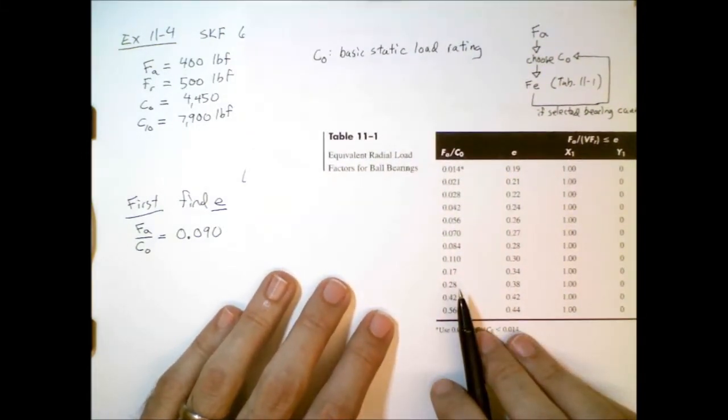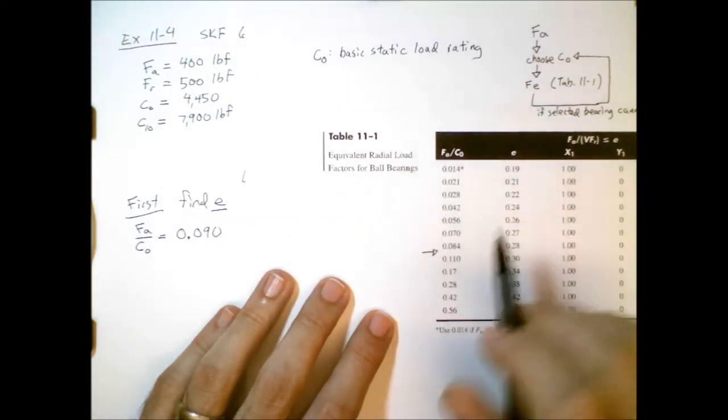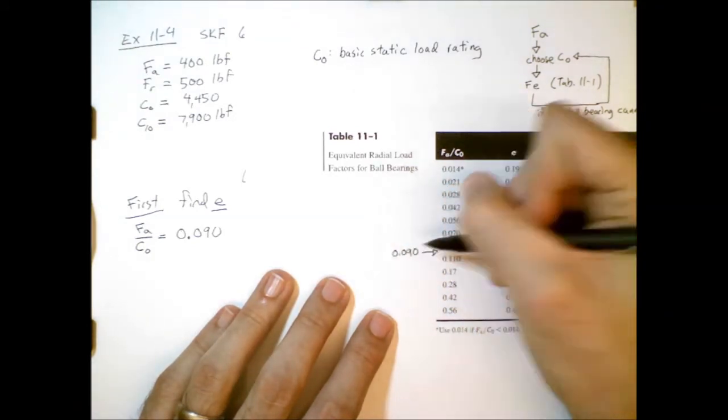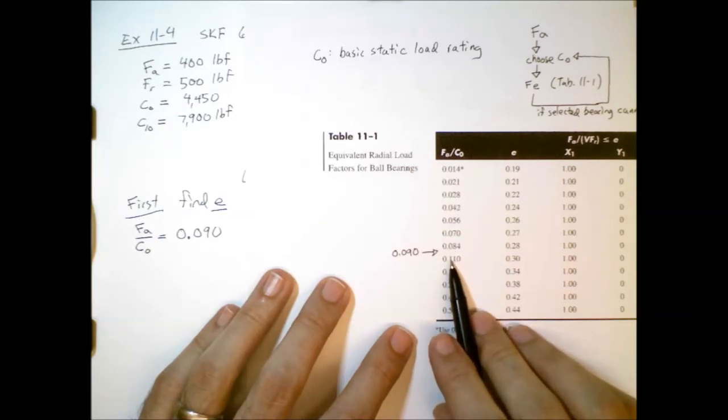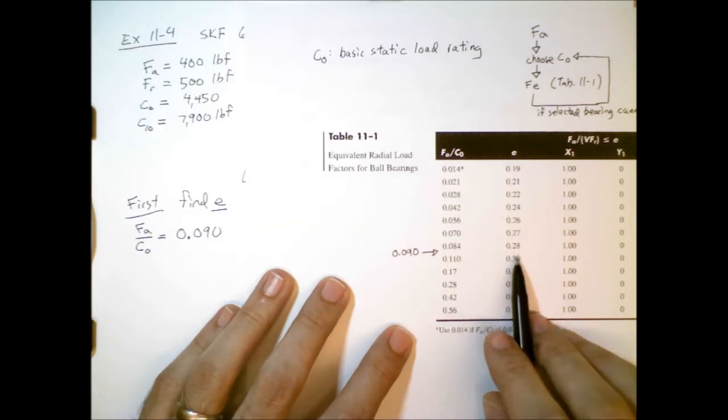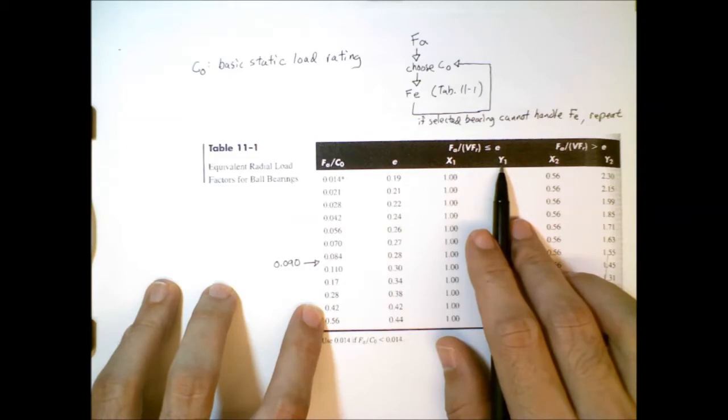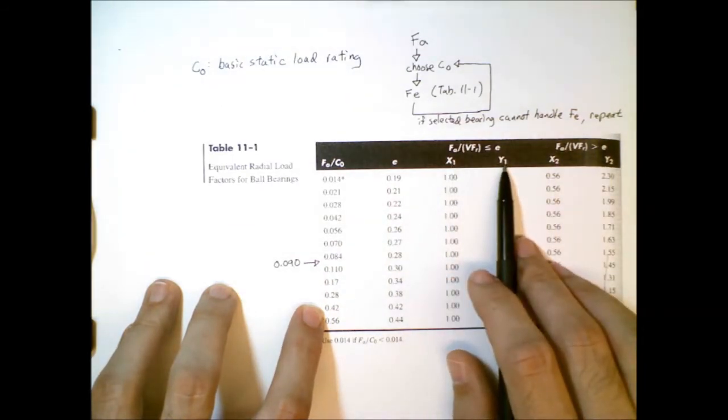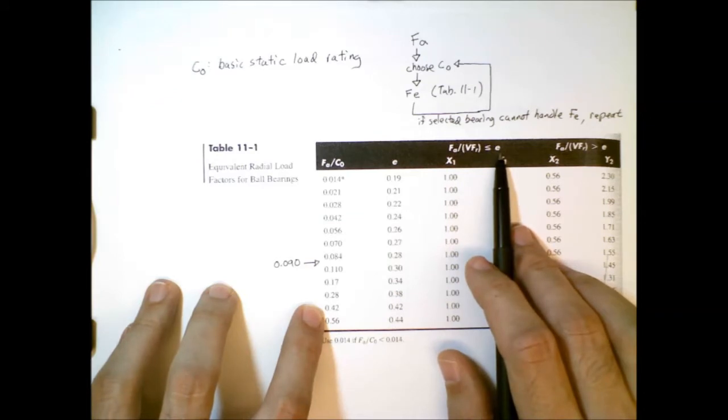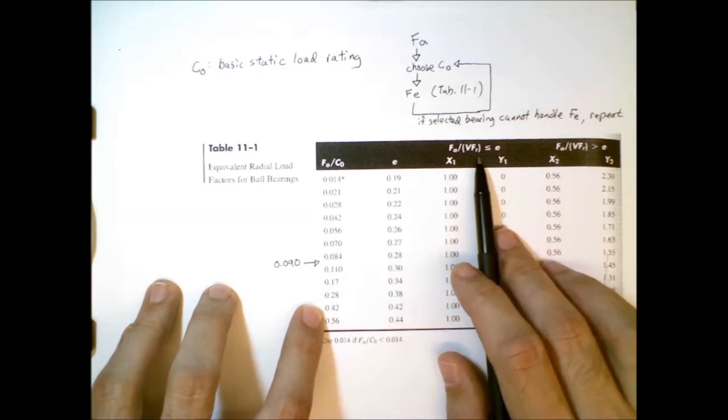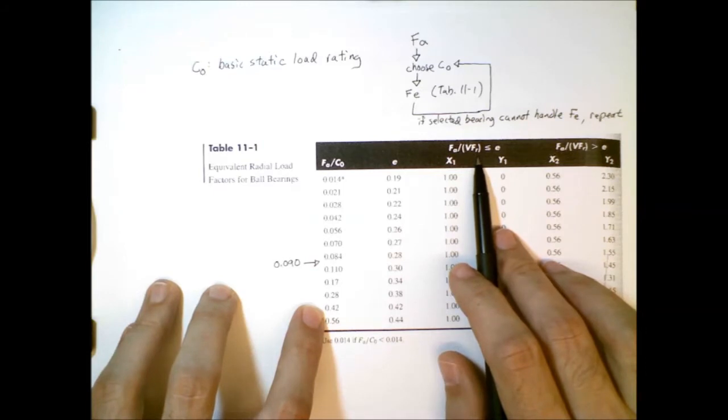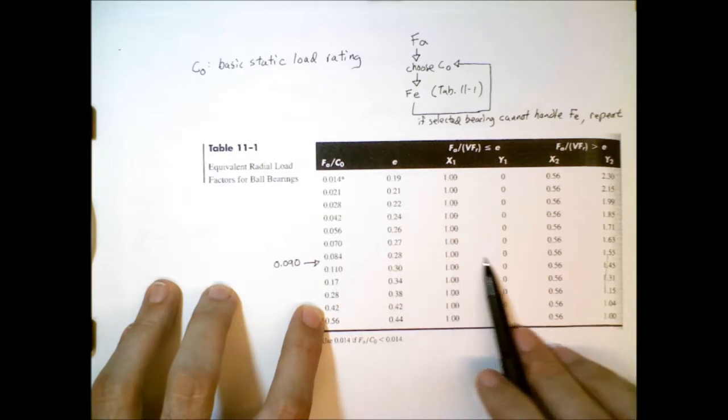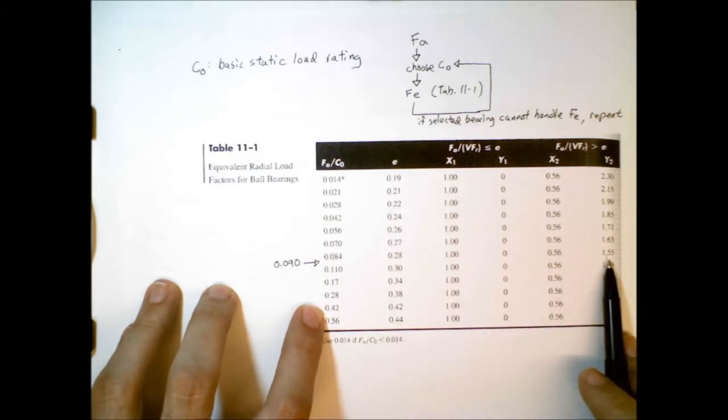So let's have a look here. It goes in between these two rows, 0.084 and 0.110. So because we don't land exactly on one of those, we're going to have to do some interpolation. We know E is going to be somewhere between 0.28 and 0.3. And then we're going to have to interpolate either for x1 and y1 or for x2 and y2. Actually, x1 and y1, that's only the case where we are less than the threshold value of E. And if that's the case, then we really don't need to do any interpolation because the equivalent radial load is equal to the radial load. So if we are above the threshold value of E, however, we do need to interpolate also for the value of y2.